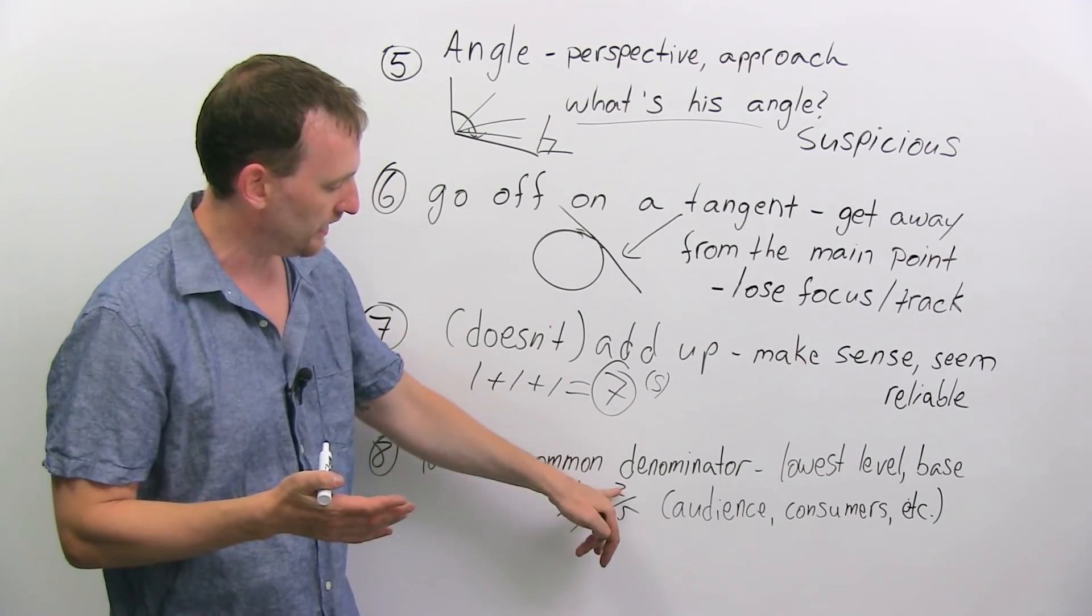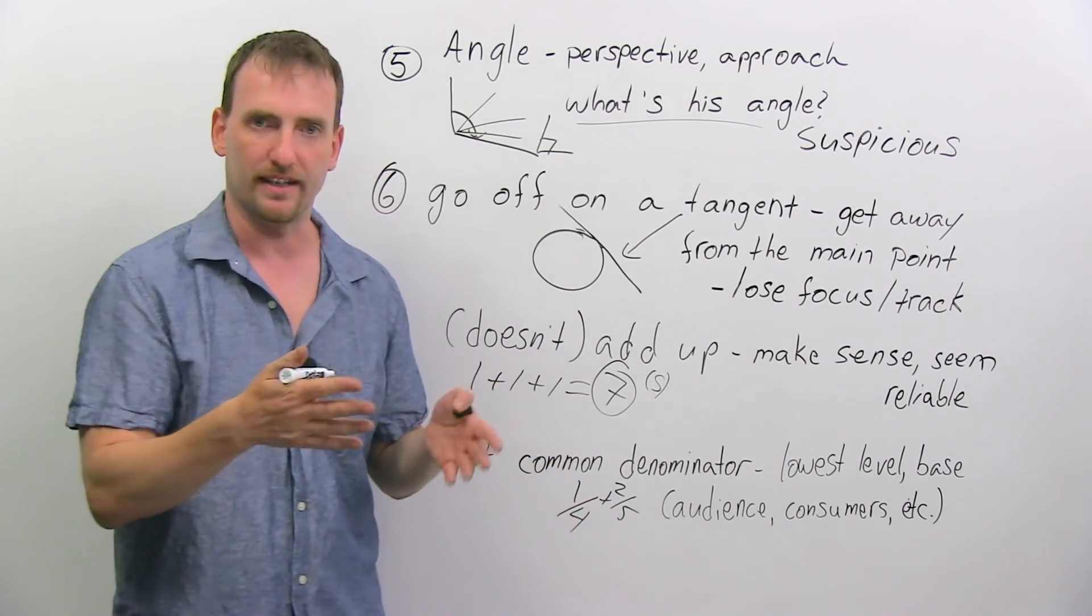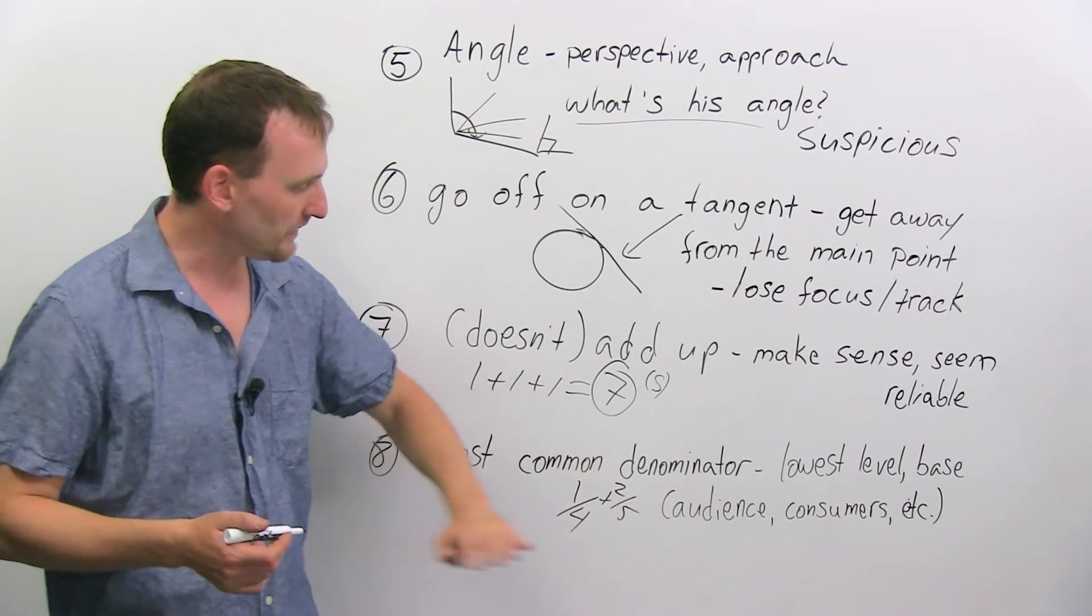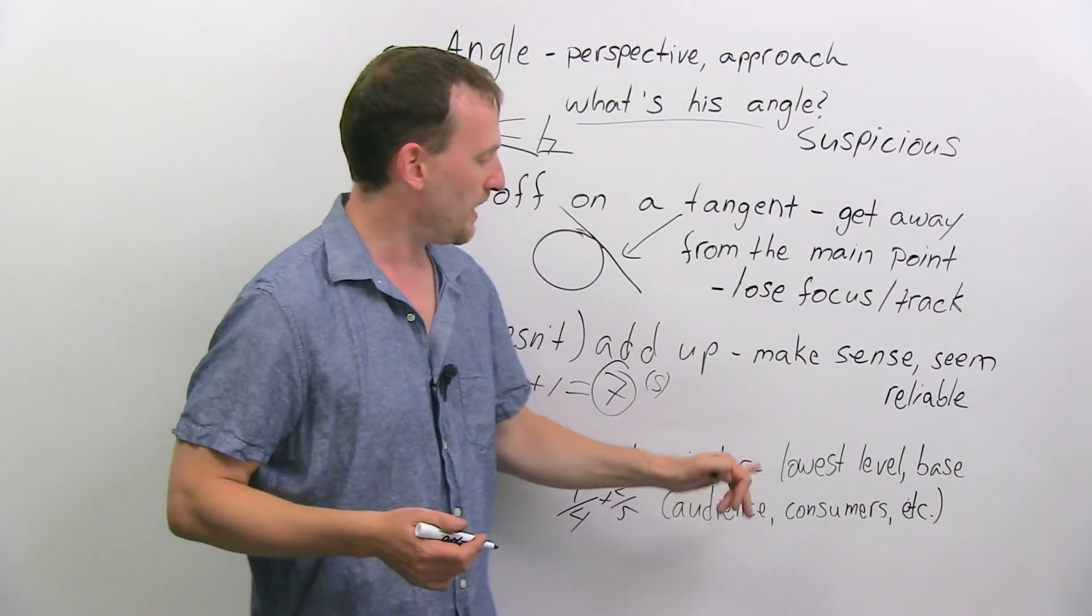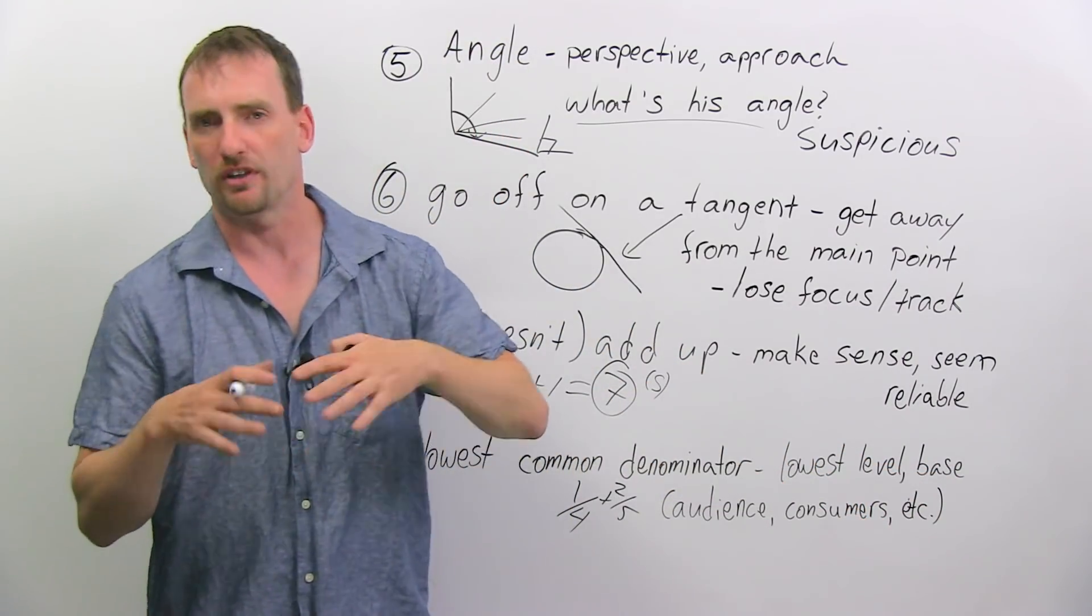and ten over, or sorry, eight over twenty, and then you make the addition. So the lowest common denominator in everyday English means the lowest level, or the base.